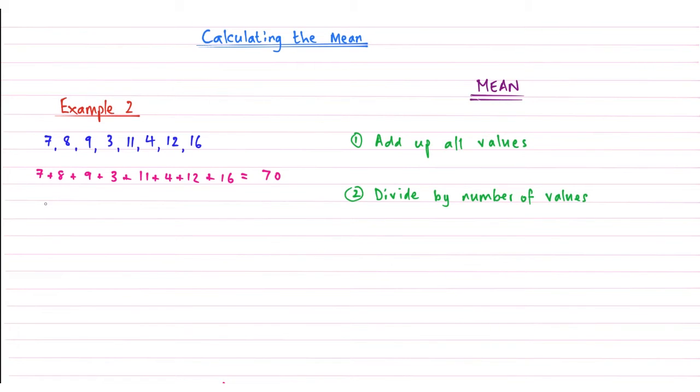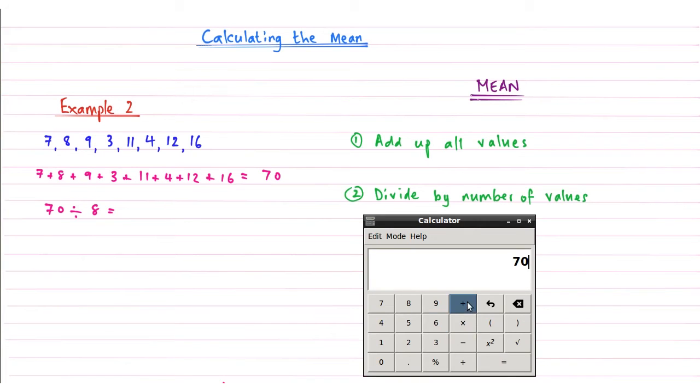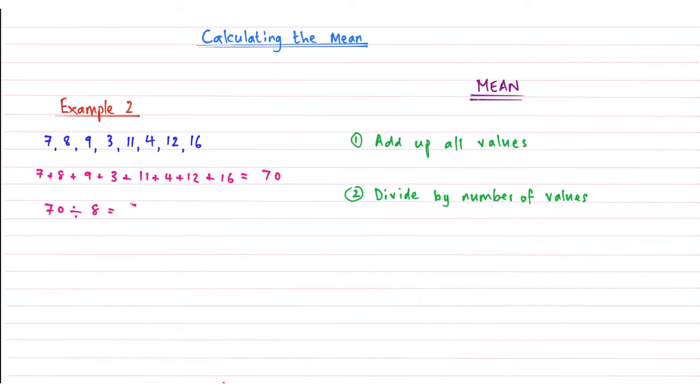And now I'm going to divide 70 by how many numbers there are. So let's count these: 1, 2, 3, 4, 5, 6, 7, 8. We've got 8 numbers. So 70 divided by 8. Again, we can use the calculator or we can use some short division. But let's use the calculator because we're here. So 70 divided by 8 equals, and that gives me the mean of 8.75.